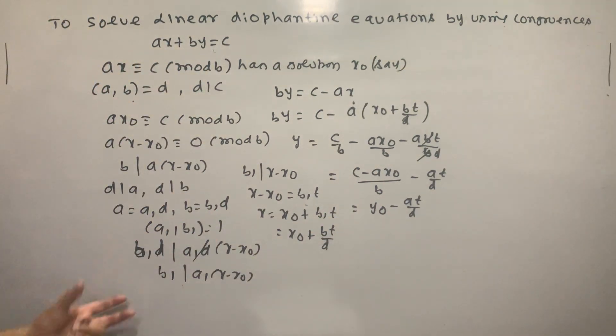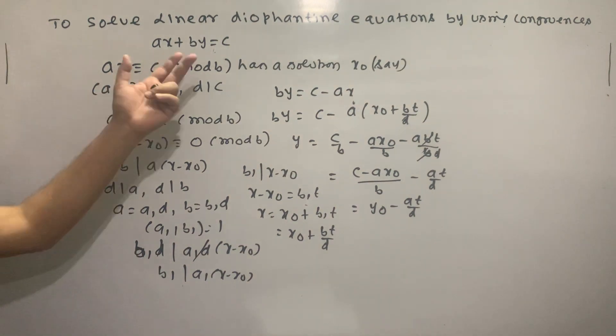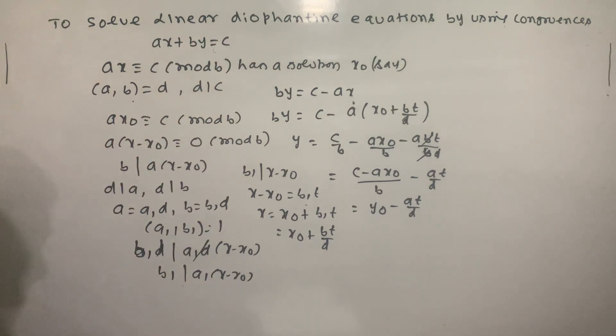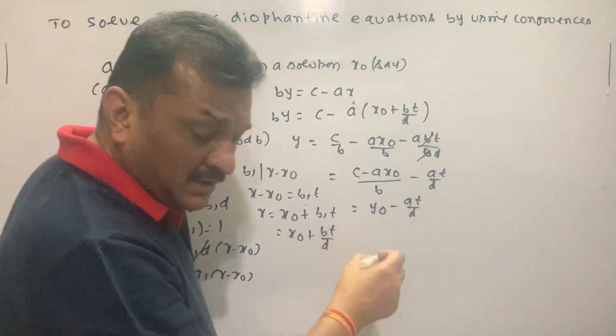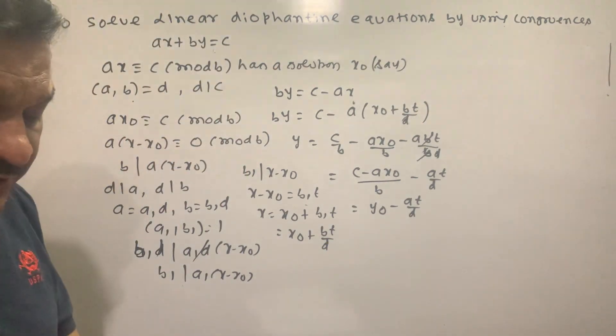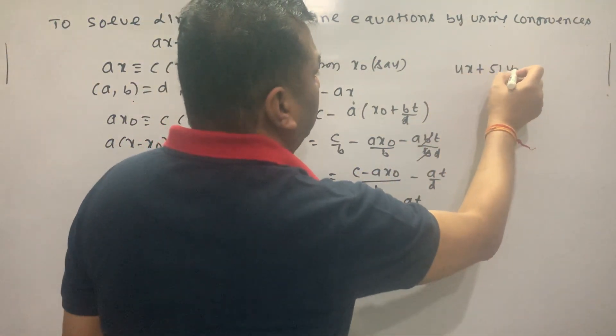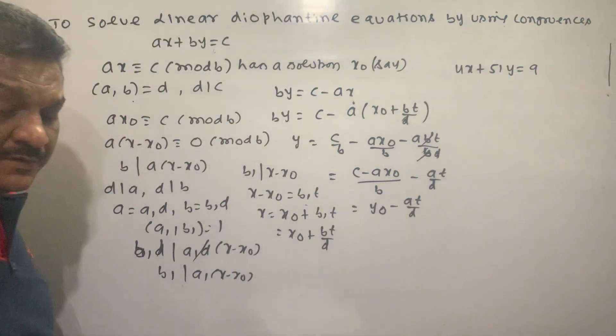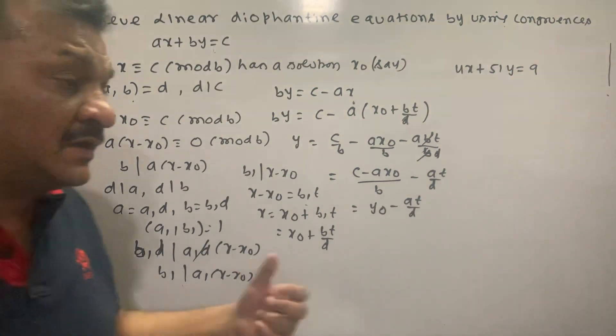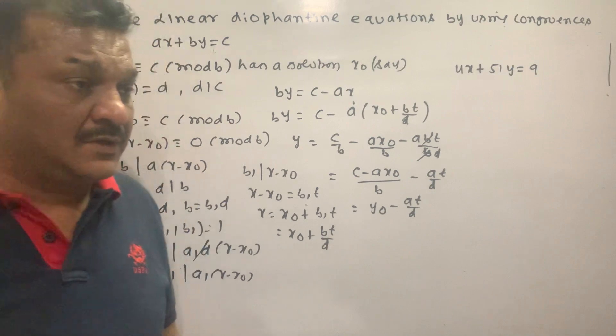Using congruence, I will explain the general solution. X naught and Y naught. So you have to follow this. Using congruence, linear Diophantine equation. I have to explain this equation. 4X plus 51Y equal to 9. Using congruence.